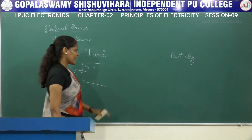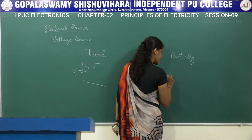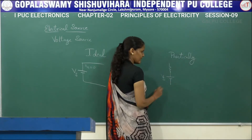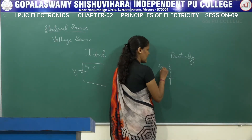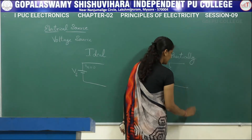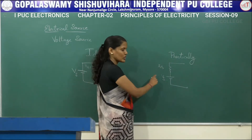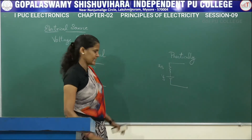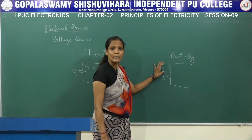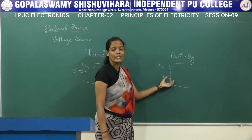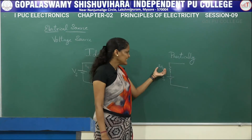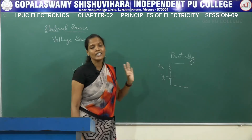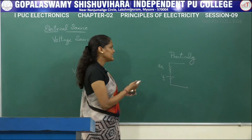But practically, the voltage source will be represented with a voltage source Vs and an internal resistance Rs — where S stands for source and R stands for resistance. This internal resistance will be in series with the voltage source. But this internal resistance will not be seen by our eyes; it will be within the source itself.